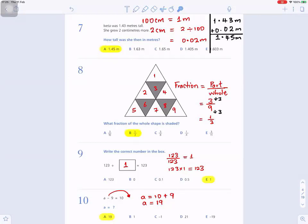Question number 8: What fraction of the whole shape is shaded? Whenever you see fraction, think of part over whole. A fraction is a part of something divided by the whole. So we need to find the whole. How many of those triangles are in that big triangle? So we count 1, 2, 3, 4, 5, 6, 7, 8, 9. So the whole is 9.